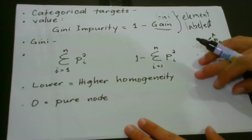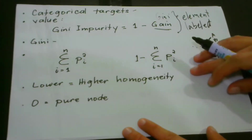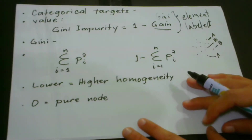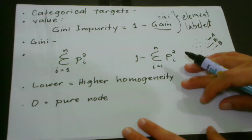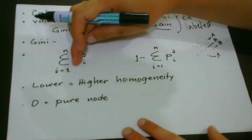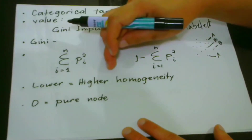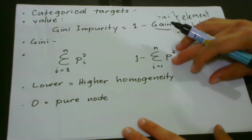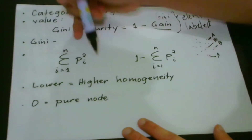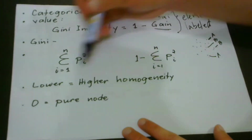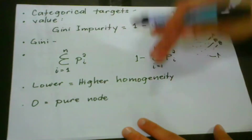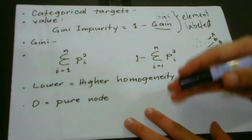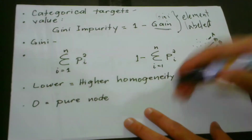So what would be the interpretation of the outcome? Just like the former two methods we have already studied, when the Gini impurity outcome is lower, it means that there is a higher homogeneity of the elements in a certain node. And when the outcome is zero, it means that our node is very pure. To properly understand how we compute Gini impurity, we are going to do the computation.